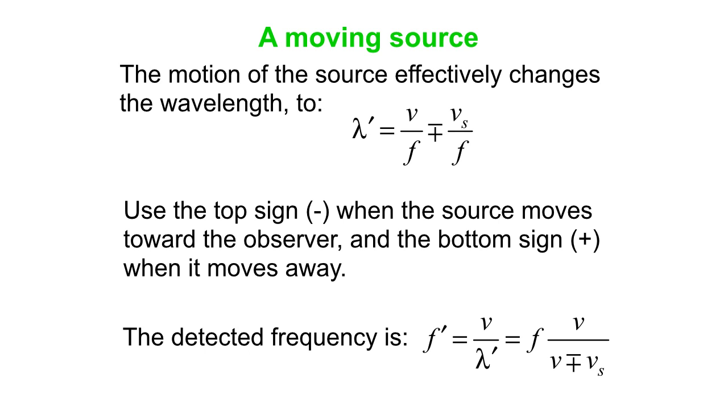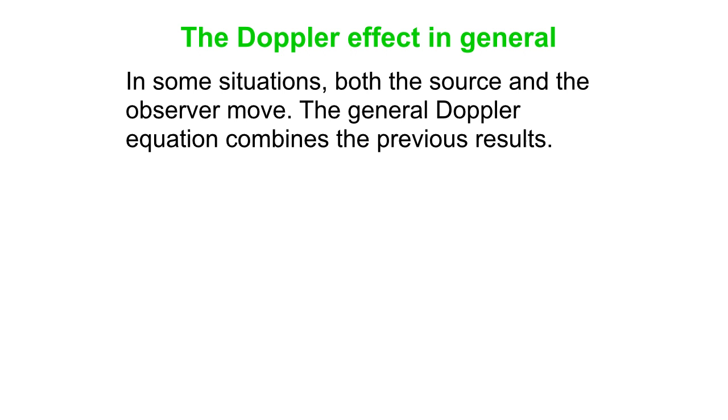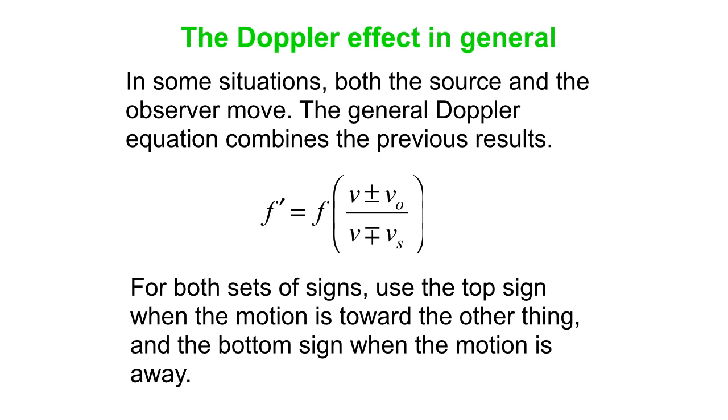Okay, so now we've sort of got these different cases. If the observer moves, if the source doesn't, we've got one equation. We've got this other one now when the source moves, but the observer doesn't. We've got this one. Well, what if everything is moving? So what we can do is just sort of glue our equations together, and we end up with this. So this is the single general purpose Doppler effect equation that works for sound. It doesn't work for electromagnetic waves, interestingly enough, but for sound.